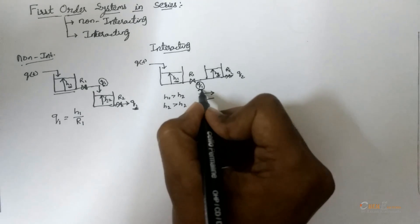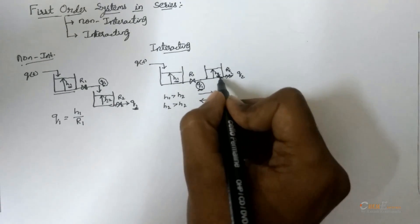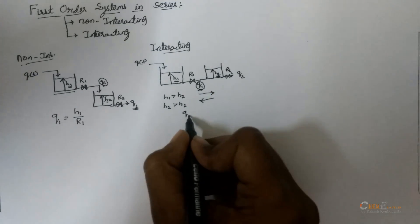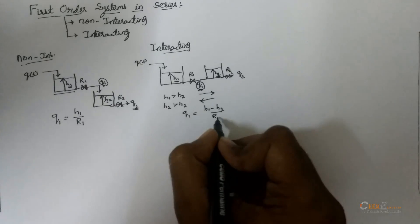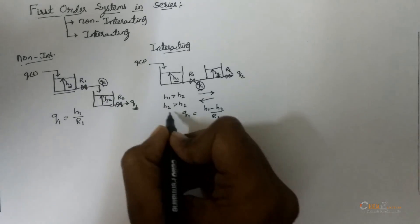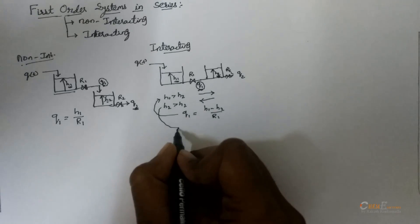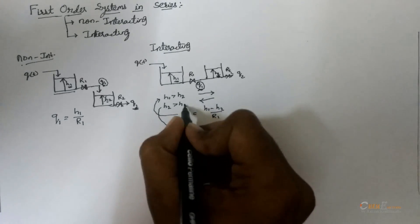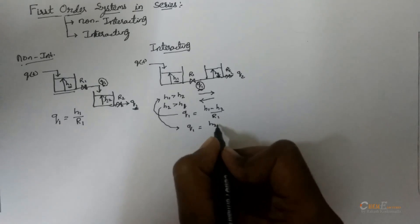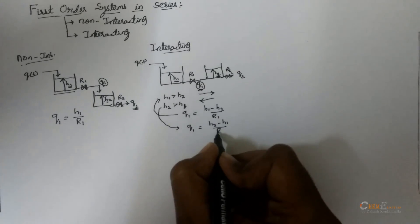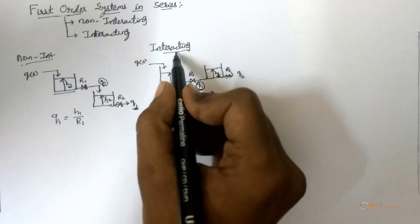Here the flow rate Q1 is dependent on the difference between the heights. Q1 will be (H1-H2)/R1 if H1 is greater than H2. If H2 is greater than H1, Q1 is equal to (H2-H1)/R1. This type of arrangement is called an interacting system.